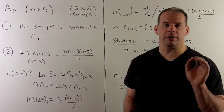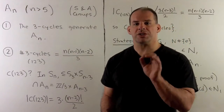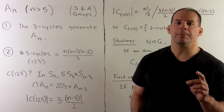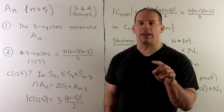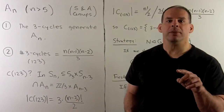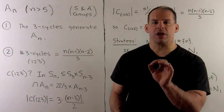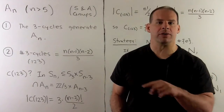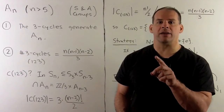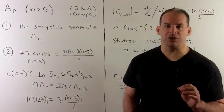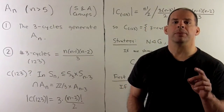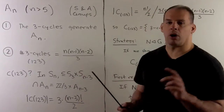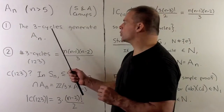Now consider the case where n is greater than 5. We just adapt the first proof that A5 is simple and add some extra bookkeeping. The basic outline is: we show the three-cycles generate all of A_n; then we show the three-cycles form their own conjugacy class; then, if a normal subgroup contains a three-cycle, we get everything back. All the work is in showing that if we have anything besides the identity, a three-cycle must show up. One result from the previous video is that three-cycles generate all of A_n.